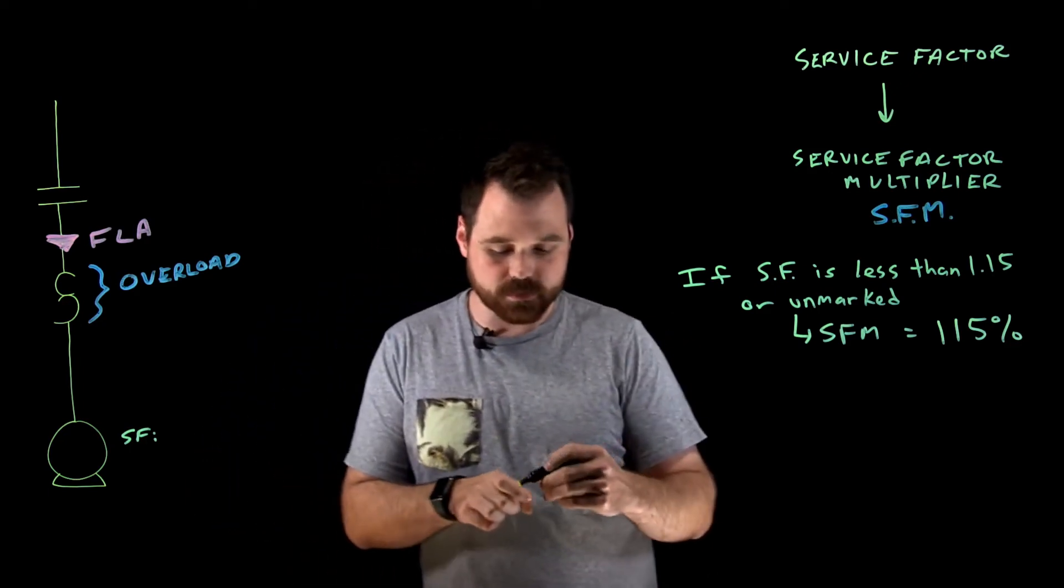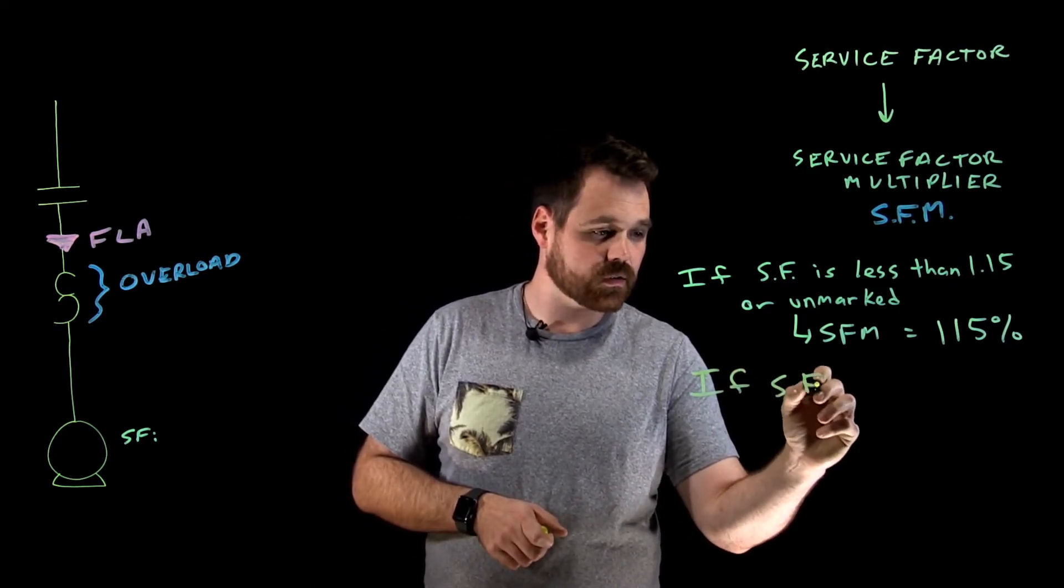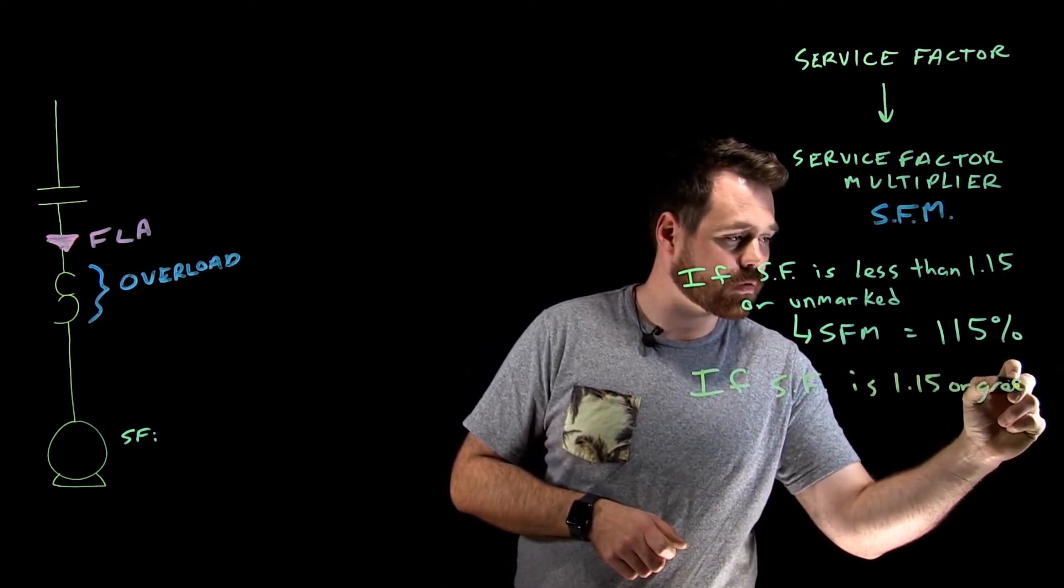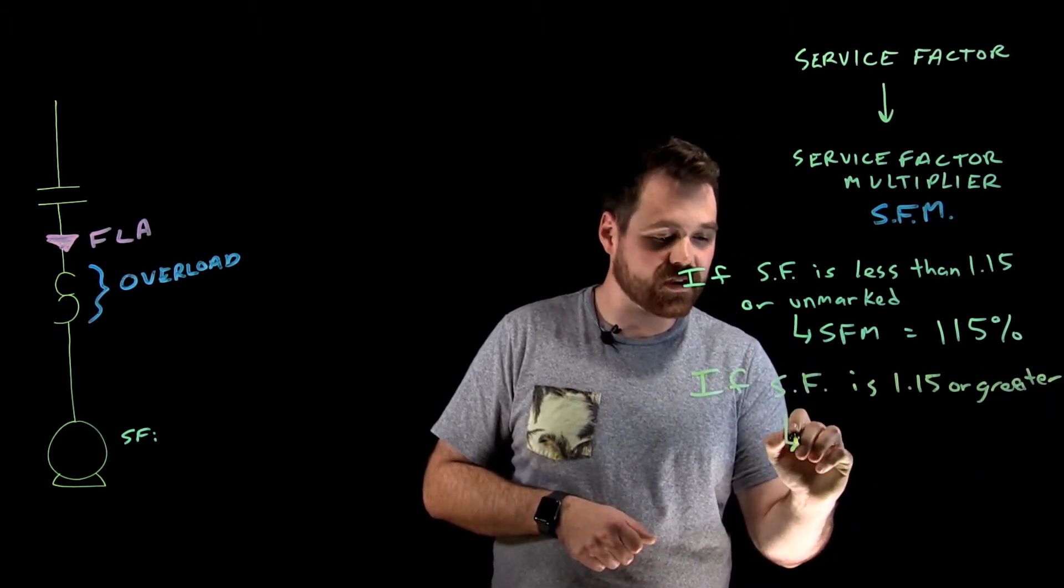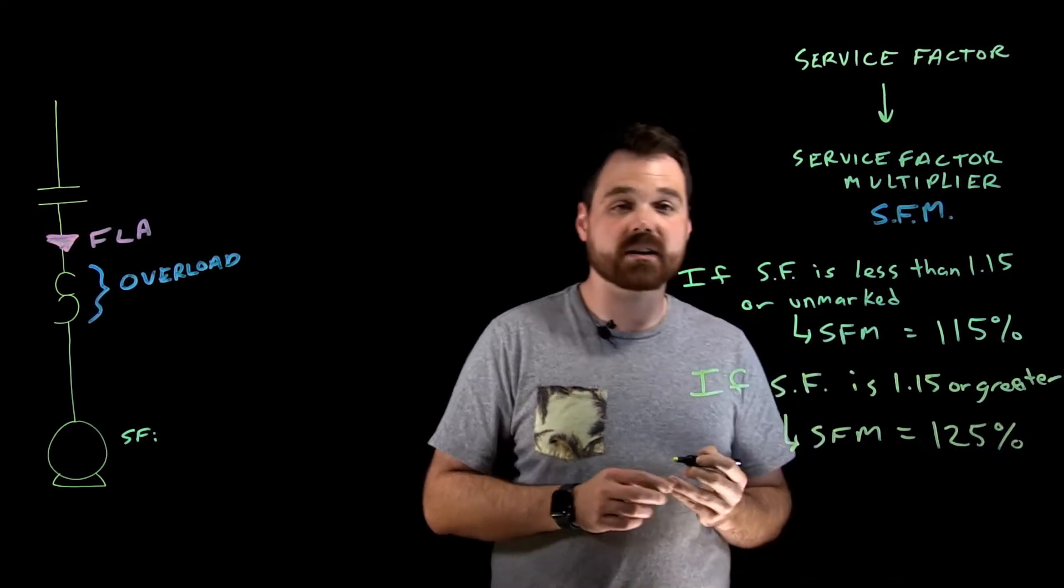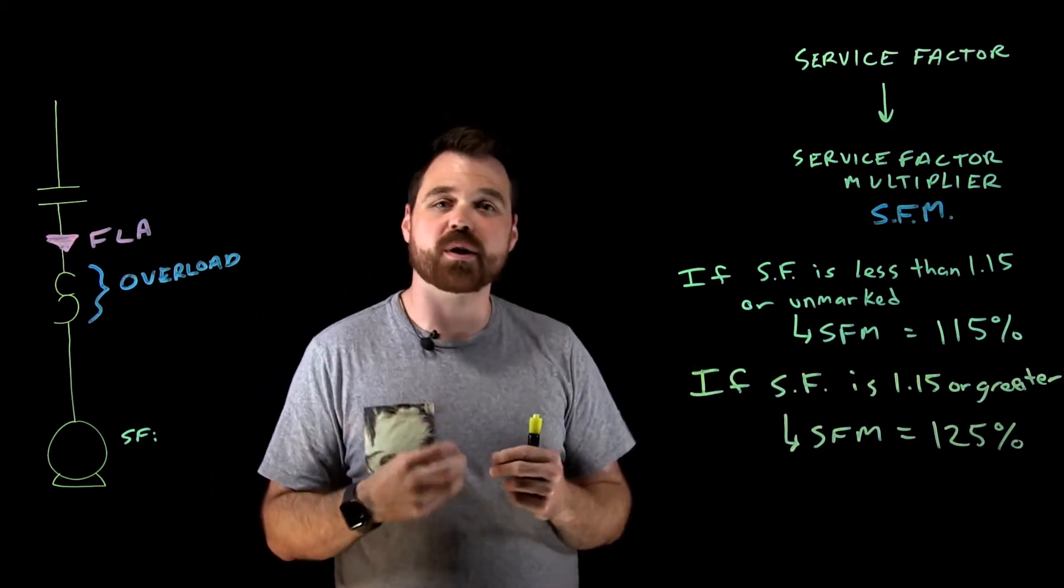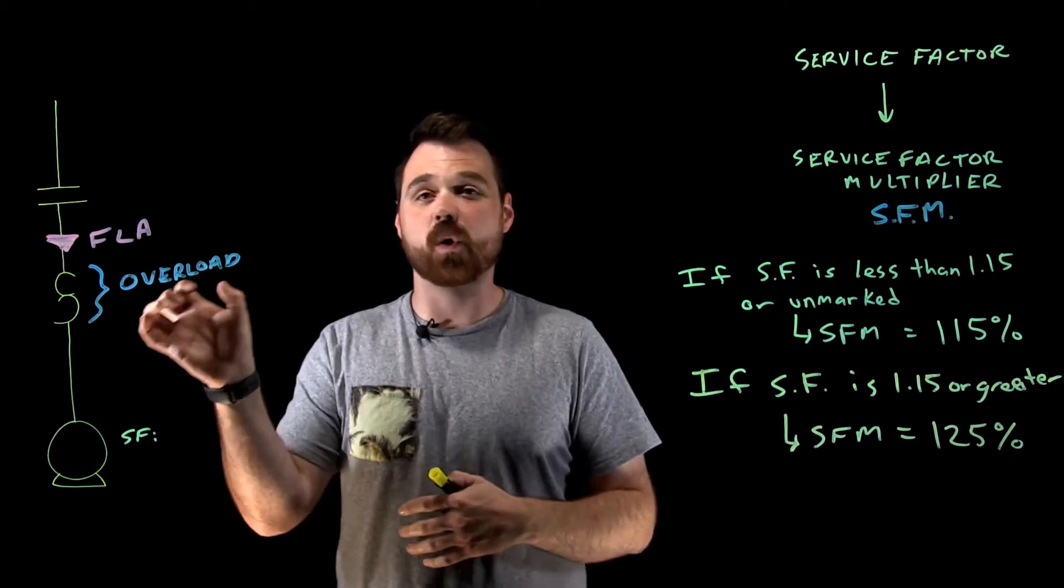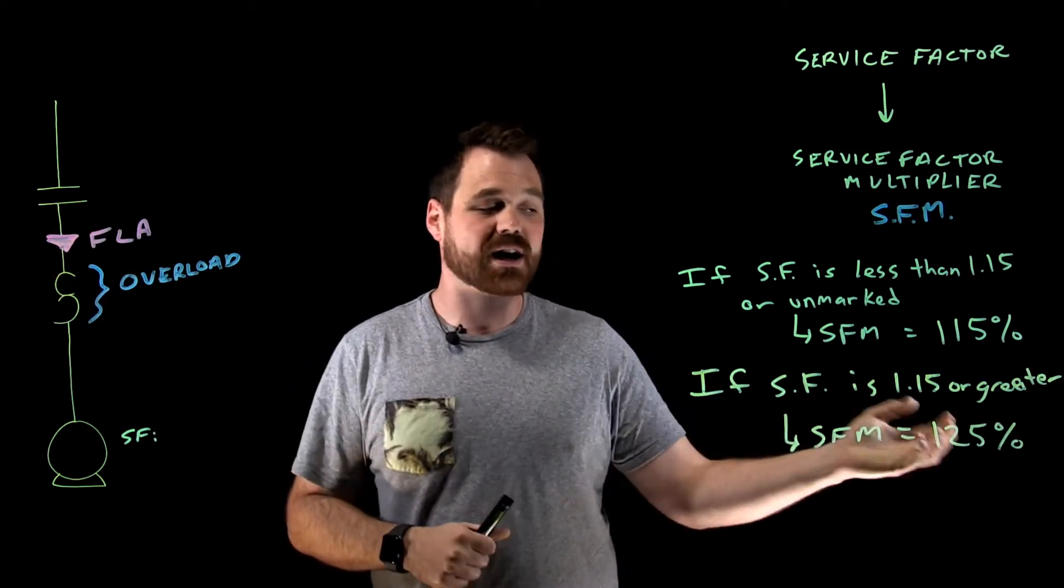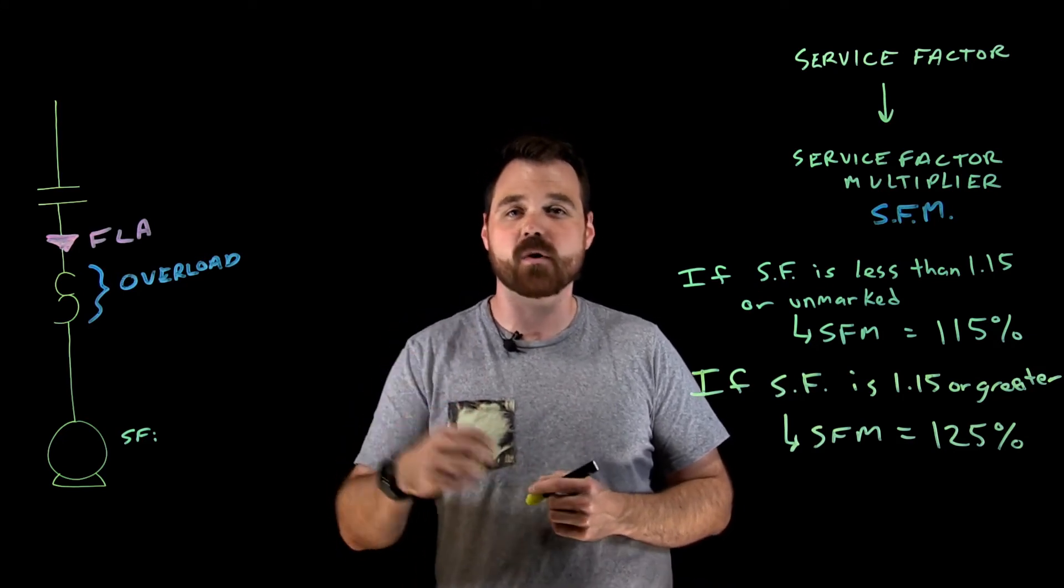Now, if different one here, if your service factor is 1.15 or greater, then your service factor multiplier equals 125%. So if my motor has a stamped service factor of 1.15 or anywhere above 1.15, then to size this overload setting, what I would do is I would take my FLA or the current flowing through that overload, and I would times it by 125%. That would be my maximum allowable setting of overloads.